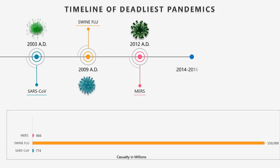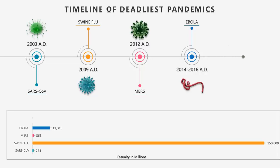At number 2: The Ebola Virus, 2014 to 2016. Ebola virus causes an acute, serious illness which is often fatal if untreated. About 11,315 people have been reported as having died from the disease in six countries: Liberia, Guinea, Sierra Leone, Nigeria, the US, and Mali.